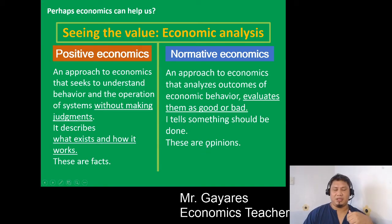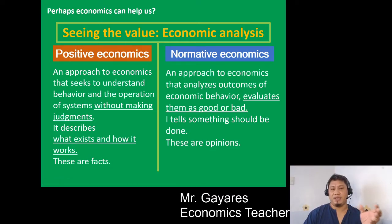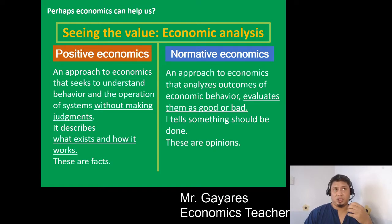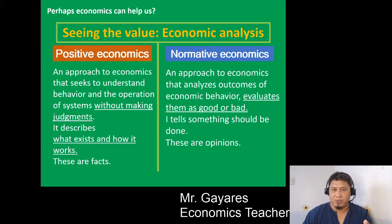Let me give an example. If the school implemented online classes, that is a positive analysis — you are merely describing what the school did, which is to switch from face-to-face to full online classes. Now, when you say normative economics, you are trying to give an opinion whether that move is good or bad. For example: 'The school should not implement online classes.' That is a normative statement because you are giving your opinion on whether they should or should not impose online classes.